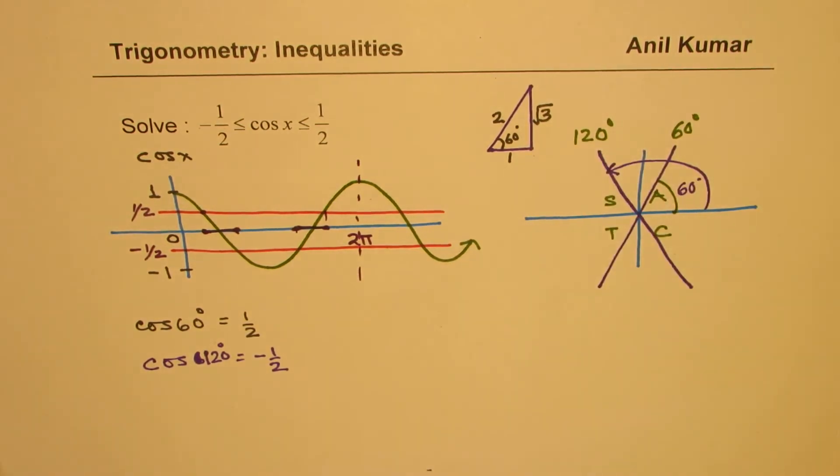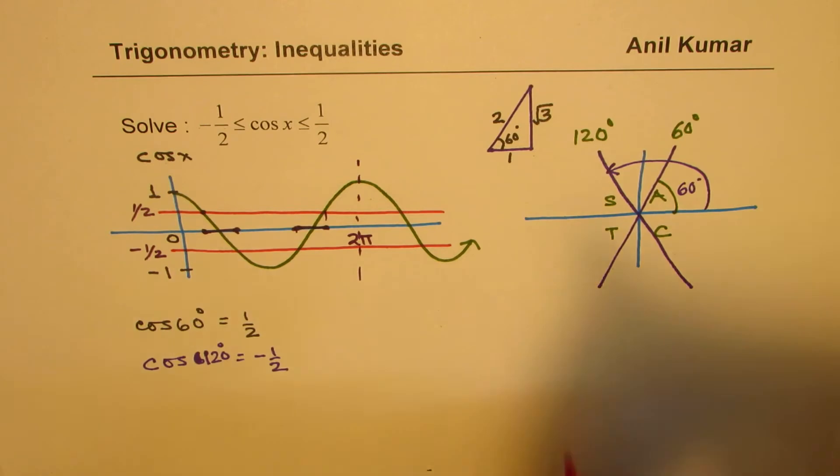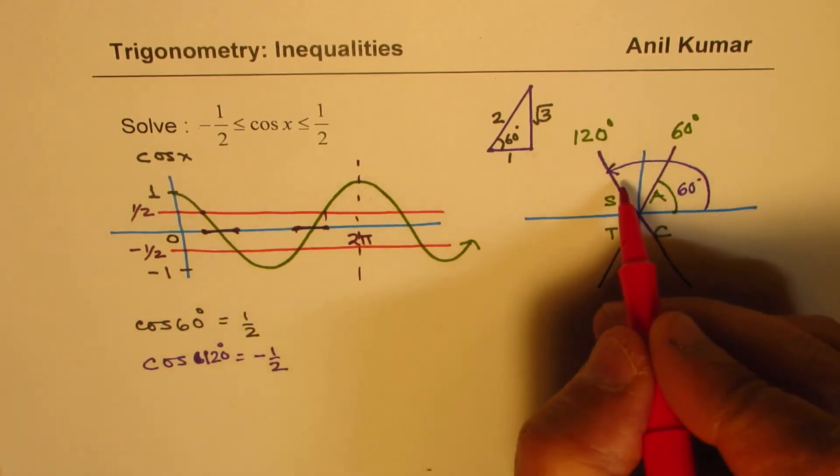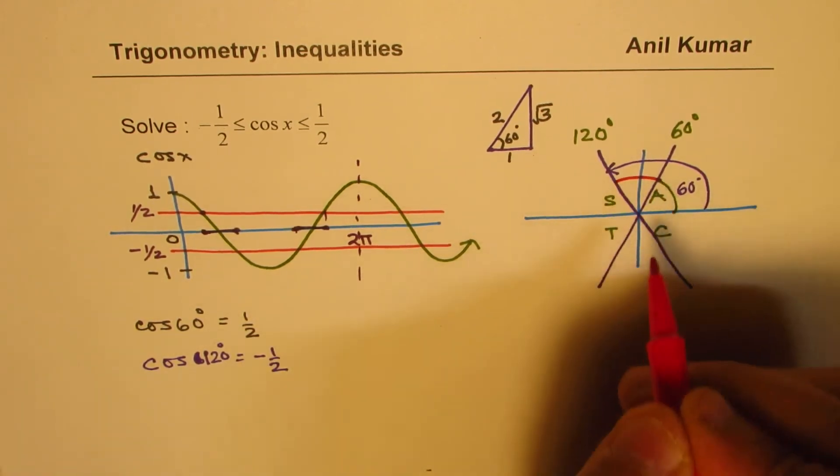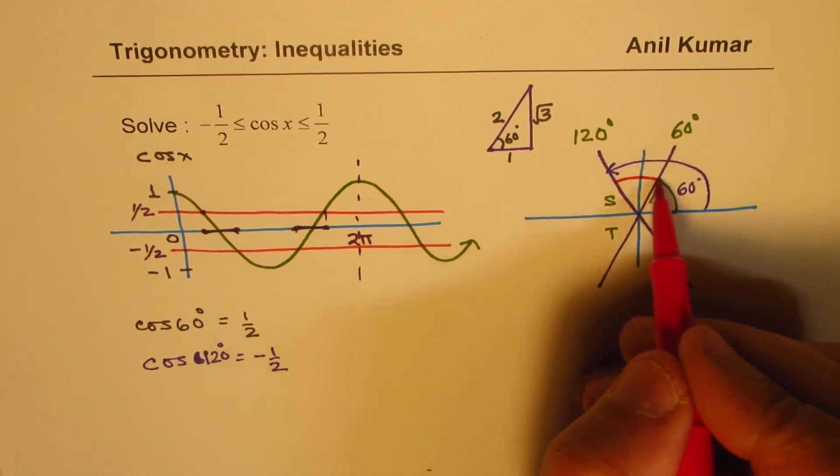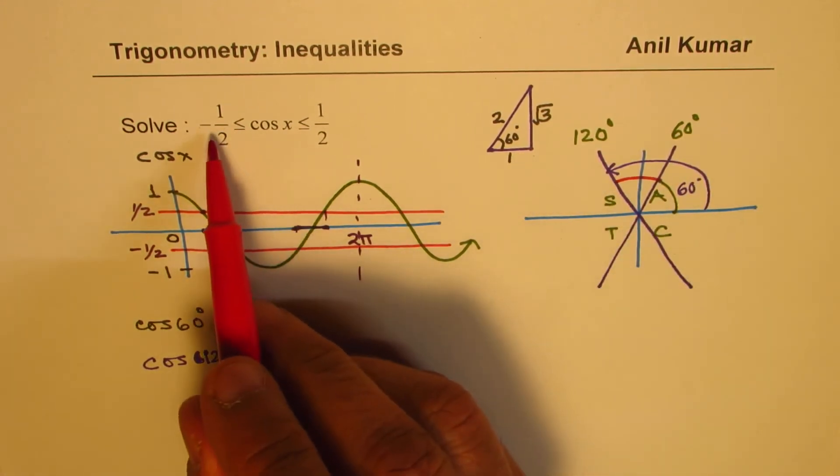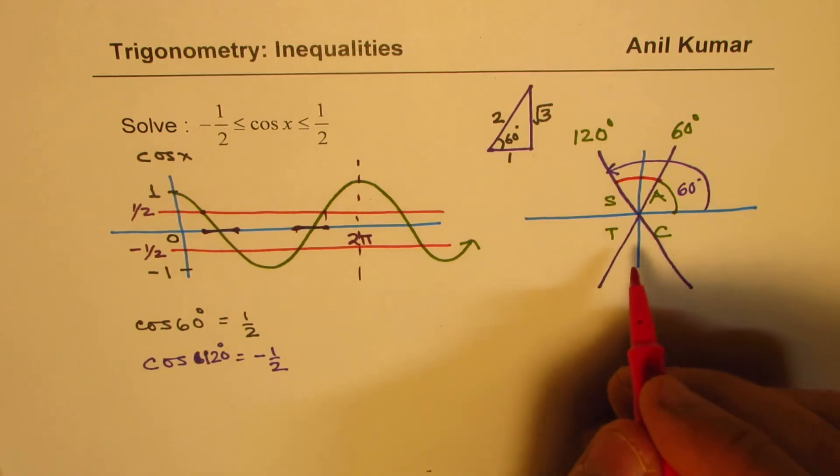So our interest is in the area when it is between plus and minus half, which is this area. So in coordinate 1 and 2, that is the area when cosine function is between minus half and plus half. In coordinate 3 and 4, it is this area.